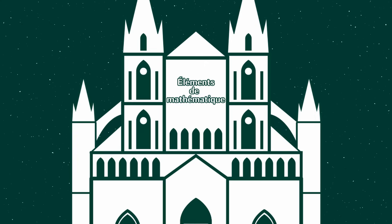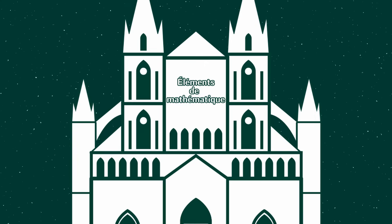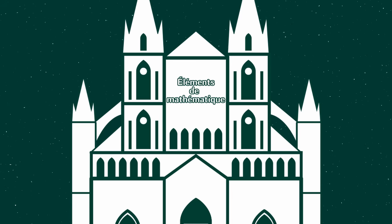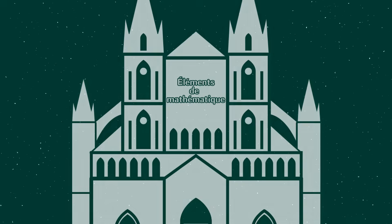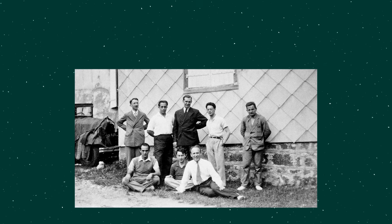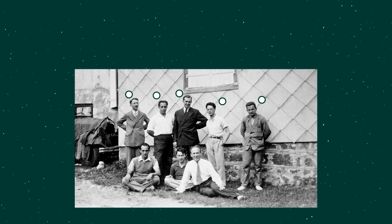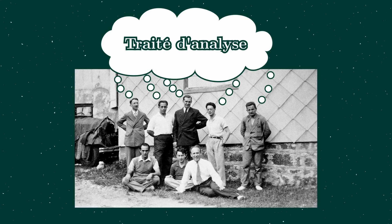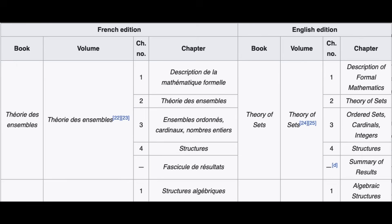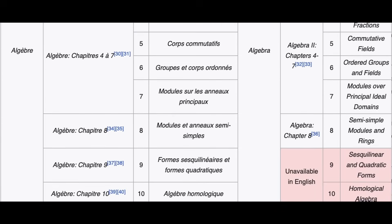One of the most monumental projects in the history of mathematics was the Elements of Mathematics series by Nicolas Bourbaki. If you're not familiar, Bourbaki is not a single person, but the collective pseudonym of a group of mostly French mathematicians. The group formed in the early 1930s with the plan of writing a textbook on analysis. But their scope would eventually expand to covering huge swaths of modern mathematics.